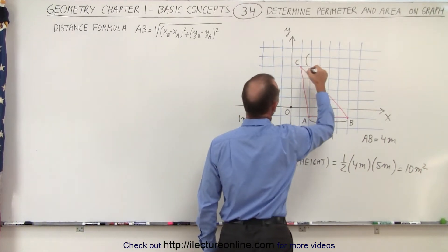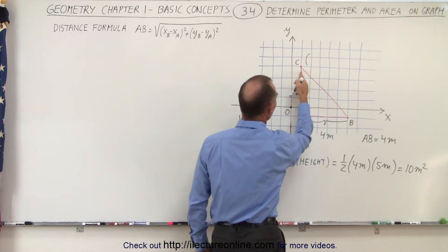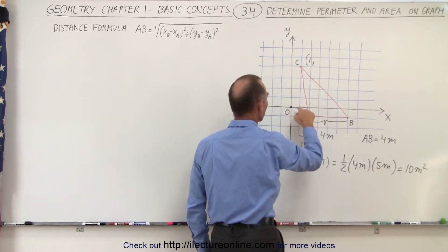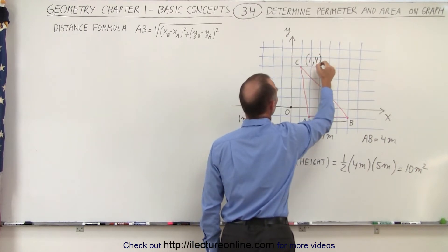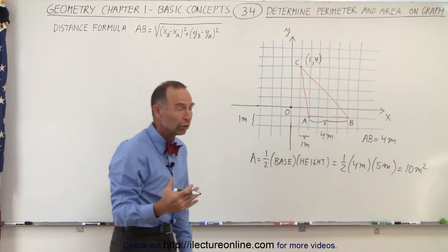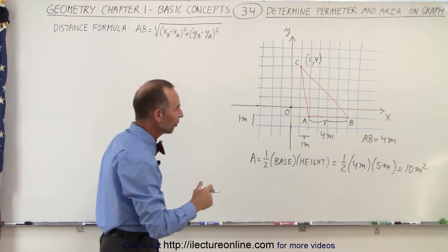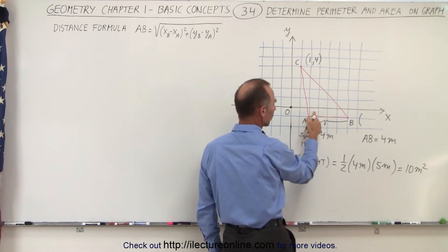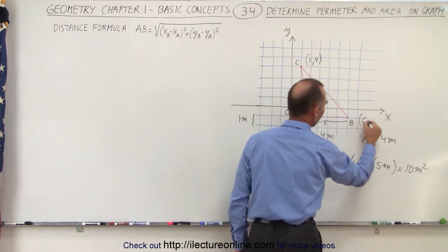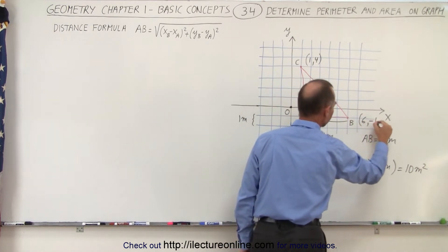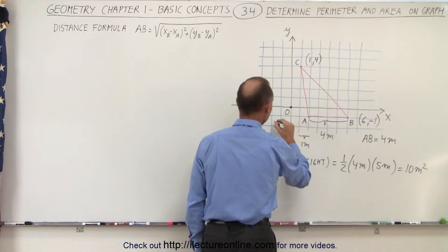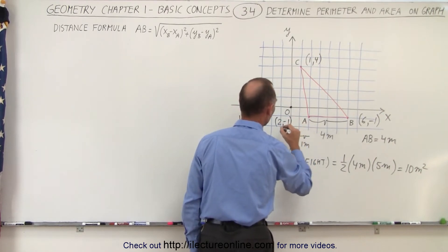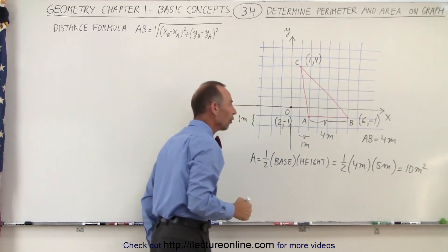Let's determine the coordinates of each point. For C, the x-value is 1 to the right of the y-axis, so x=1, and the y-value is 4, giving coordinates (1, 4). For point B, the x-coordinate is 6 and the y-coordinate is minus 1, giving (6, -1). For A, the x-coordinate is 2 and the y-coordinate is minus 1, giving (2, -1). Now we have the coordinates of all three points.